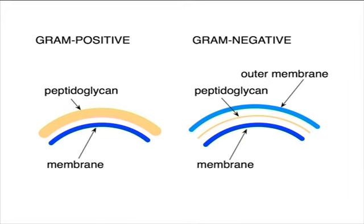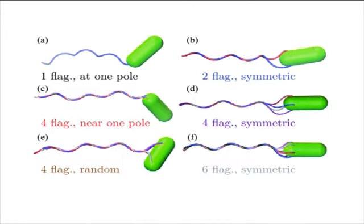Fimbriae or pili are hair-like structures present only in gram-negative bacteria. Based on their functions, pili are of six types. Some pili help in the transfer of genetic material during conjugation, as shown in the figure.